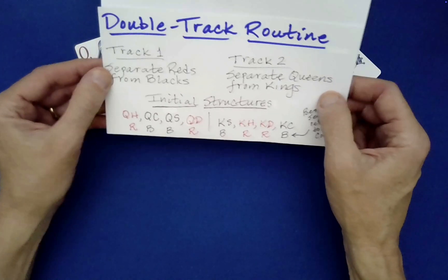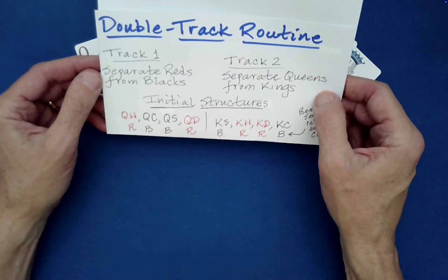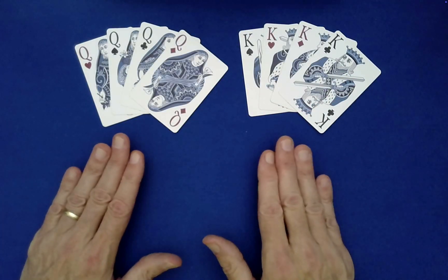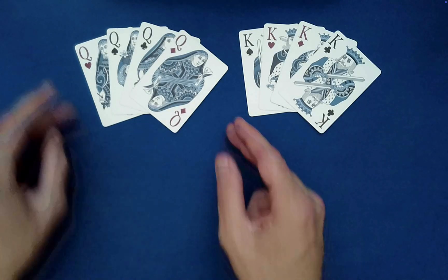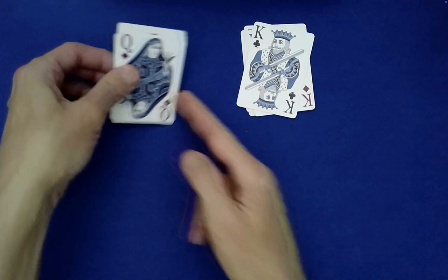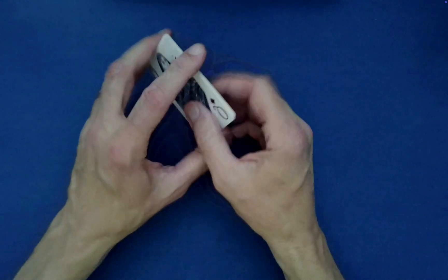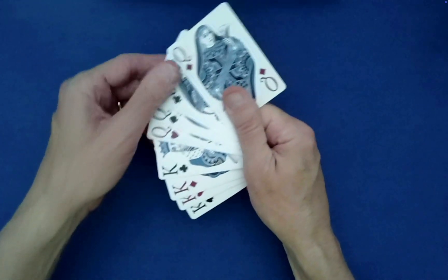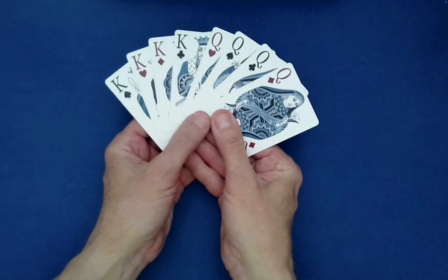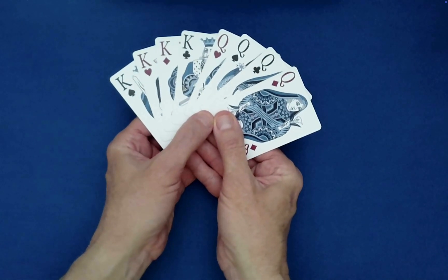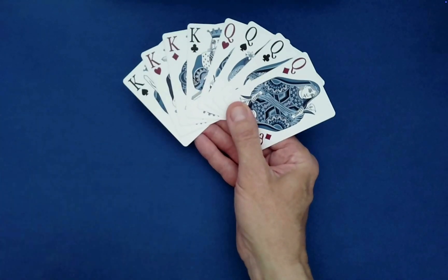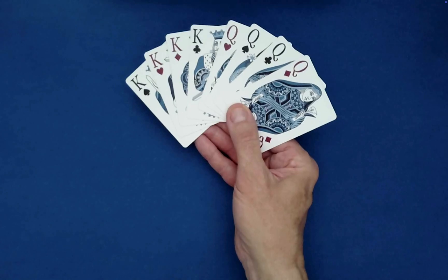So for track one, we're going to separate the reds from the blacks. Now what's nice about this particular case is randomly stacking these, which is what we ask the spectator to do, will create a Bessie sequence of order eight. Now, why that's nice is it means we won't have to perform that triangle deal. That's kind of nice.